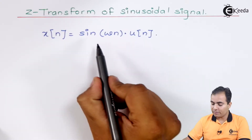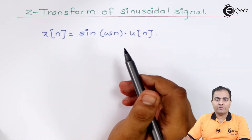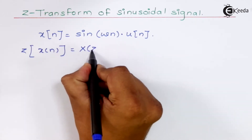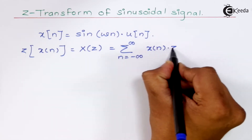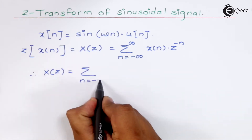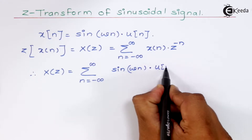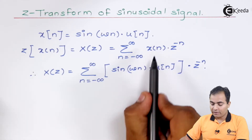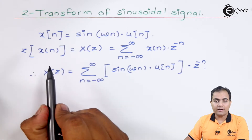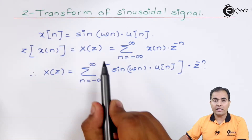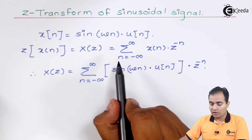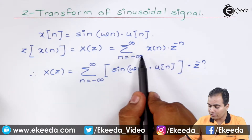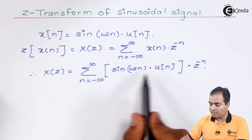As the function is a right-handed sinusoidal wave, we multiply sine omega n by u(n). We will apply a Z-transform on both sides. We have substituted X(n) = sine(ωn)·u(n) and applied the definition of the Z-transform: X(z) = summation from minus infinity to infinity of X(n)·Z^(−n). My X(n) is sine(ωn)·u(n).